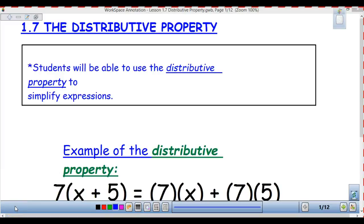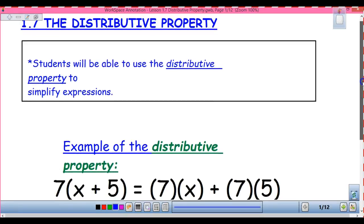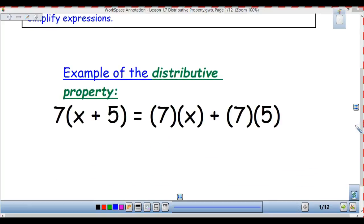All right, so the distributive property. How many of you have seen this before? Most of us do. Okay, so when we have a number outside of the parentheses and we're going to multiply that, and one of those is a variable, we need to multiply that number on the outside by both of the things on the inside.